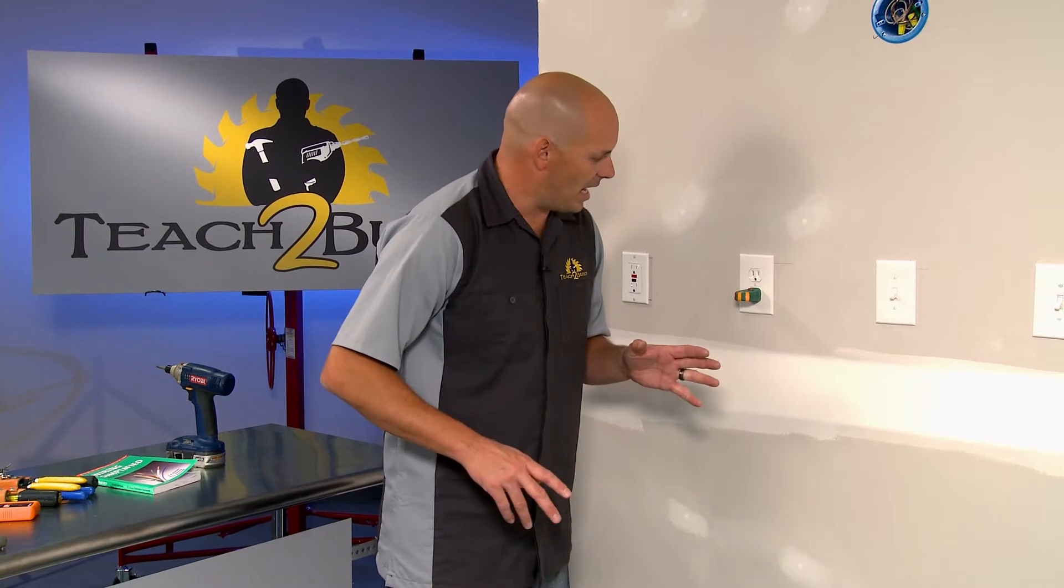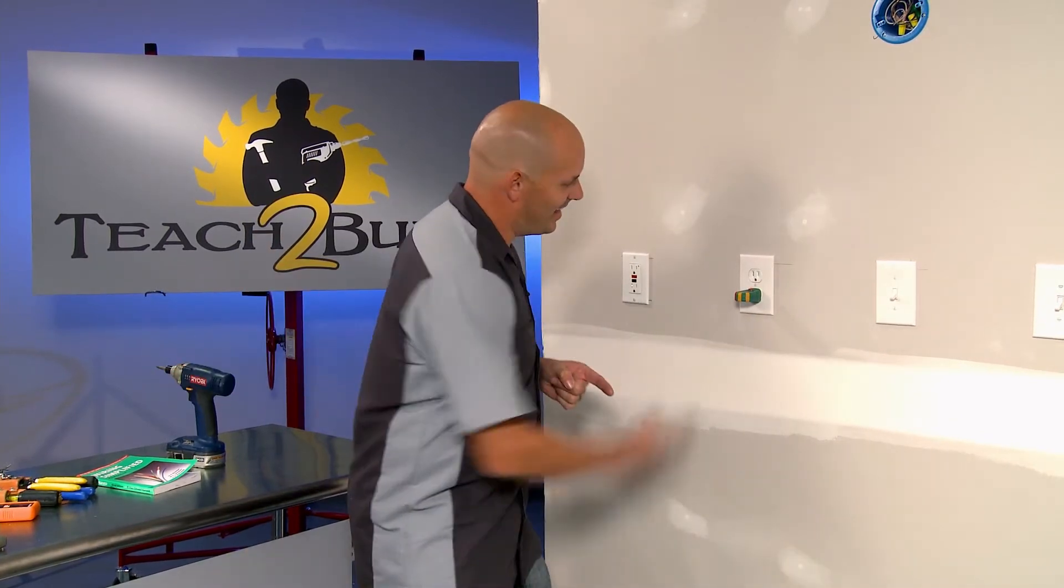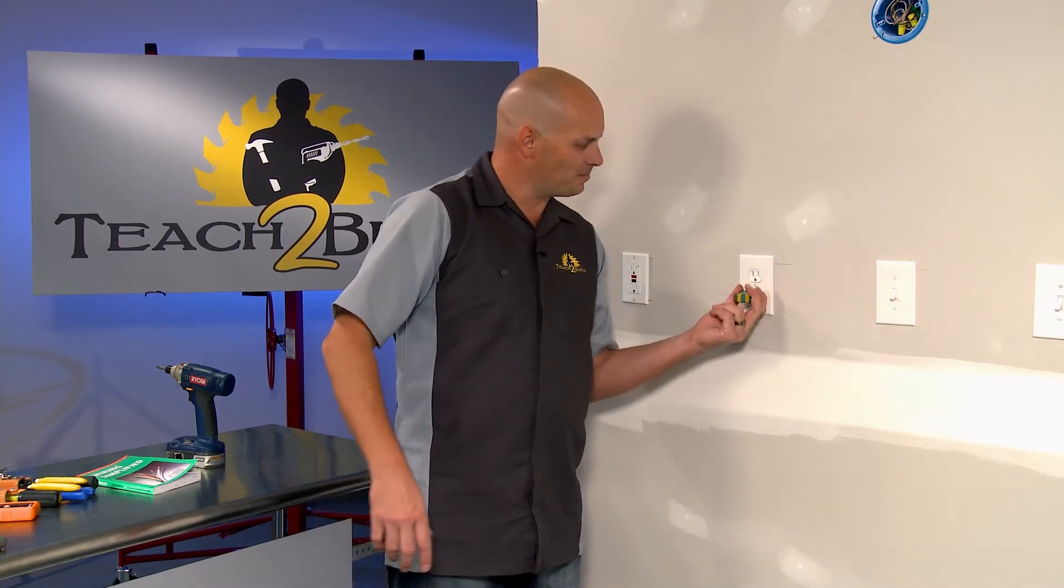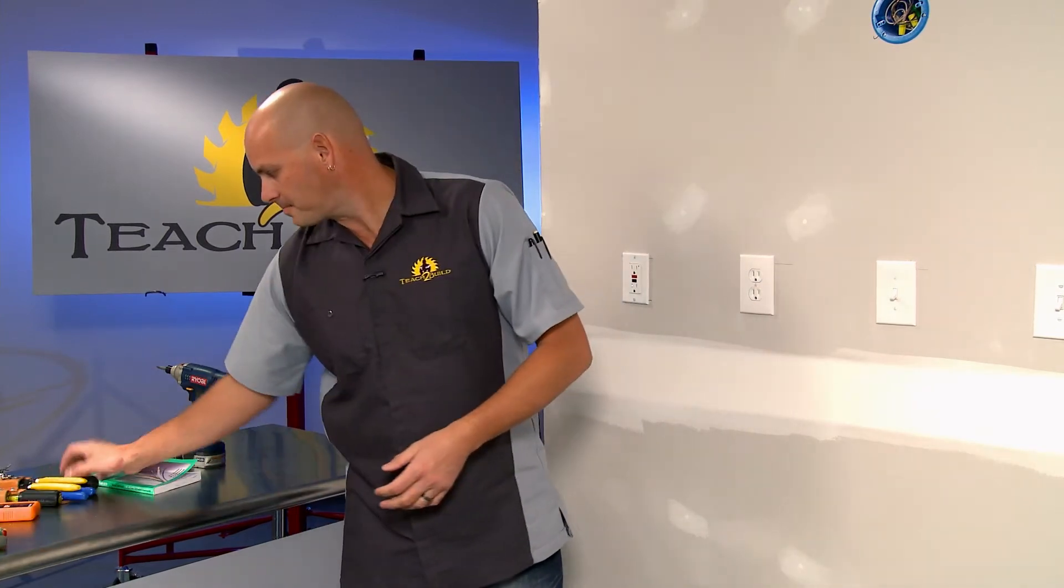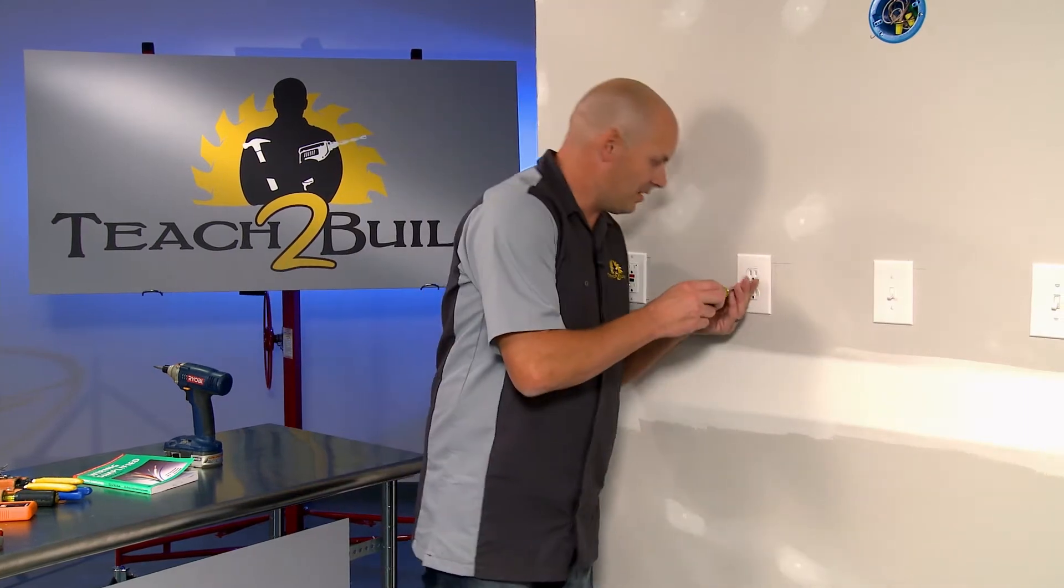Now, you start by turning off the power. We're going to turn it off like this. Look at that. Work like a champ. No power. We should be good to go. We'll take this cover off and get this outlet swapped out.